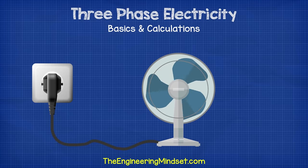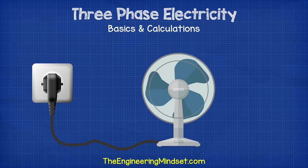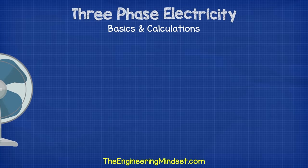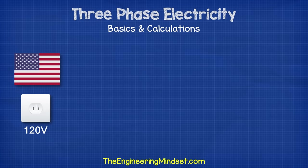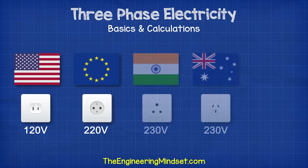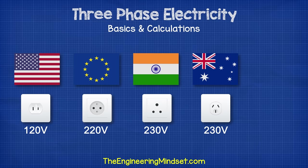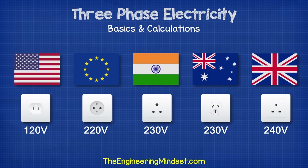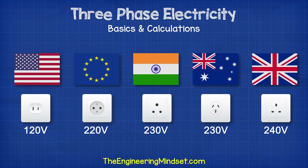We use the power sockets to power our electrical devices. The voltage from these plugs varies depending on where in the world we are. For example, North America uses 120 volts, Europe uses 220 volts, Australia and India use 230 volts, and the UK uses 240 volts. This is the standard voltage set by each country's government regulations. You can look these up online or measure it at home if you have the right tools.